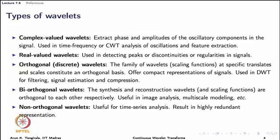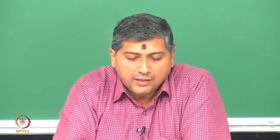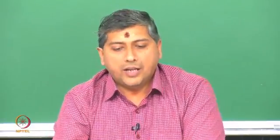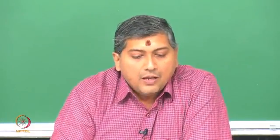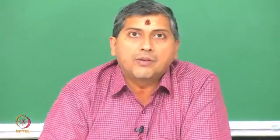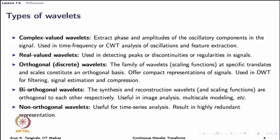Complex valued wavelets are useful in extracting the phase and amplitudes of oscillations — they are used in time-frequency analysis of oscillations or to extract features in the time-frequency plane. On the other hand, real valued wavelets are used in detecting peaks or discontinuities; Gaussian derivatives are very useful in this respect. When you move to discrete wavelet transform, there is another classification based on whether the wavelets are orthogonal to the scaling function or biorthogonal. These terminologies will become clear when we study DWT in detail in the next unit.